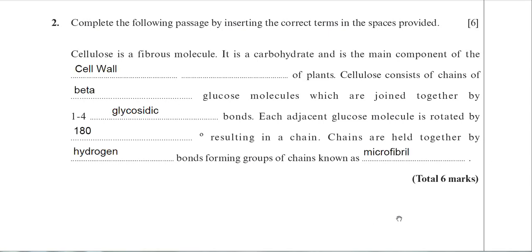I've filled in the blanks now. I just want to make one more point about the glycosidic bond — just to remind you that it's called a 1,4 glycosidic bond because the bond is formed between carbon 1 and carbon 4 of neighbouring glucose molecules. So that's the end of question two.